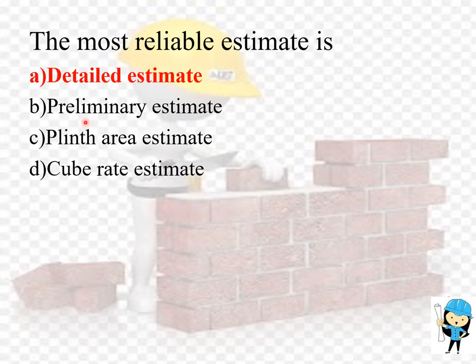Preliminary estimate gives the approximate cost of the building or construction. Plane area estimate is prepared on the basis of plane area of the building, the rate being deduced from the cost of buildings having similar properties, specification, height and construction in the locality.